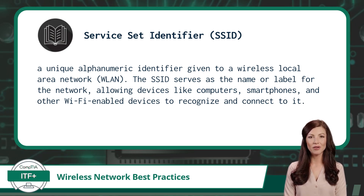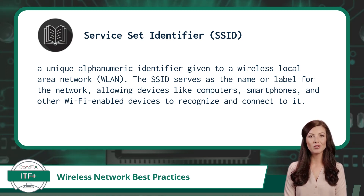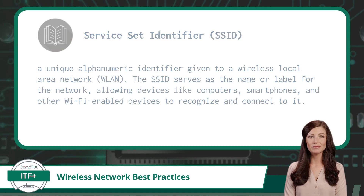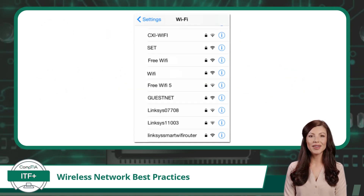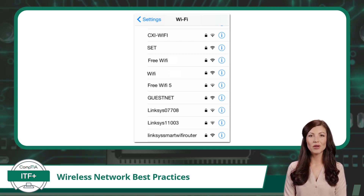The SSID is a unique alphanumeric identifier given to a wireless local area network. The SSID serves as the name or label for the network, allowing devices like computers, smartphones, and other Wi-Fi-enabled devices to recognize and connect to it. The SSID is essential because it helps devices identify and connect to the correct wireless network. When you want to join a Wi-Fi network, you select its SSID from a list, like the one behind me. Look familiar?